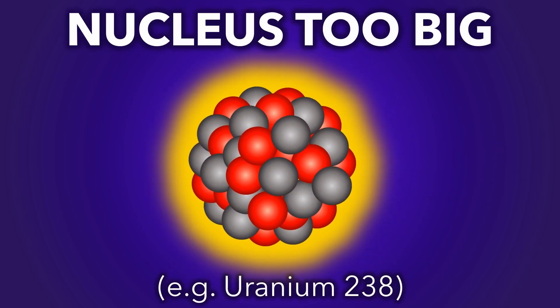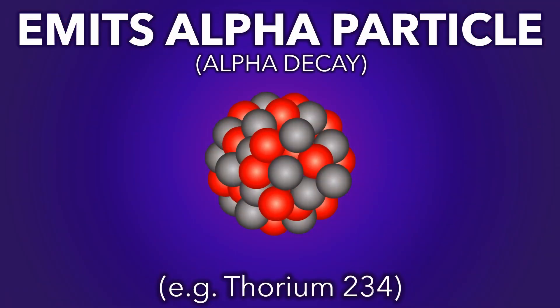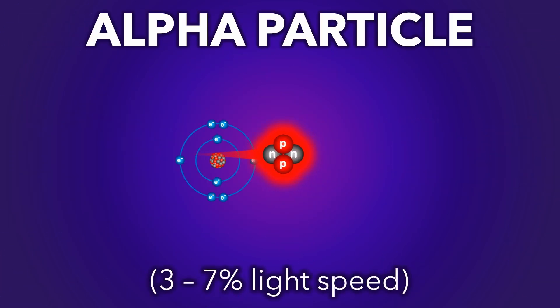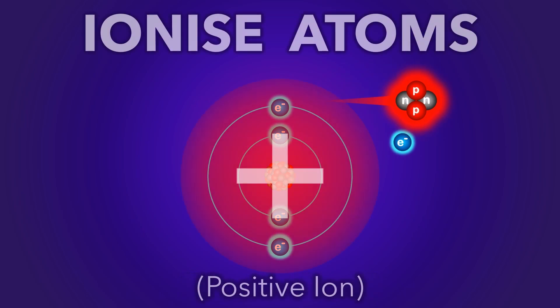When a nucleus is too big, it emits an alpha particle to become smaller. An alpha particle is ejected at about 5% light speed and has enough energy to kick electrons from atoms, turning them into ions.